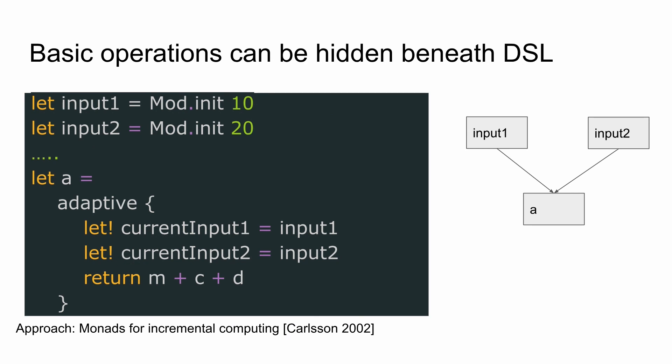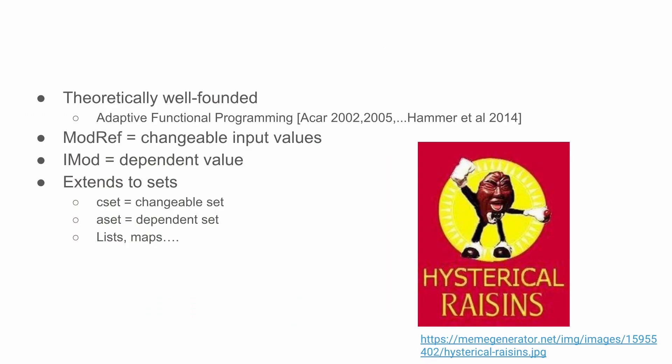This also works with monads to make things nicer — there's a paper about this. Here we have a domain-specific language that says each time input 1 and input 2 needs to be recomputed if you want to compute A. This builds the dependency graph. Our names are somewhat unusual: we have inputs called mod-ref and imod for dependent values as parts of the dependency graph, but they should actually be called 'changeable ref' and 'adaptive ref'. Then we have a changeable set and an adaptive set.